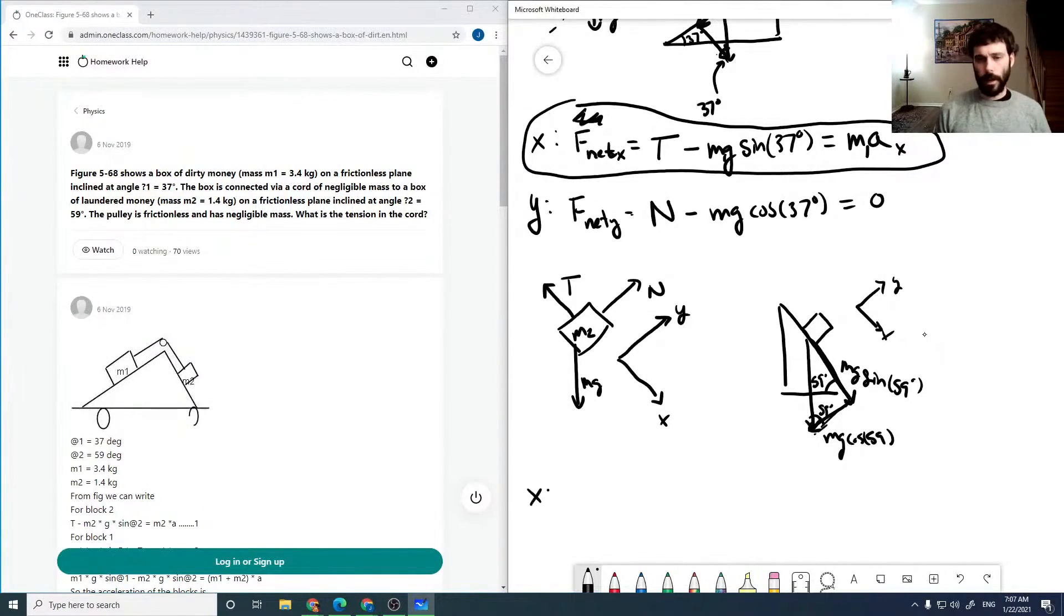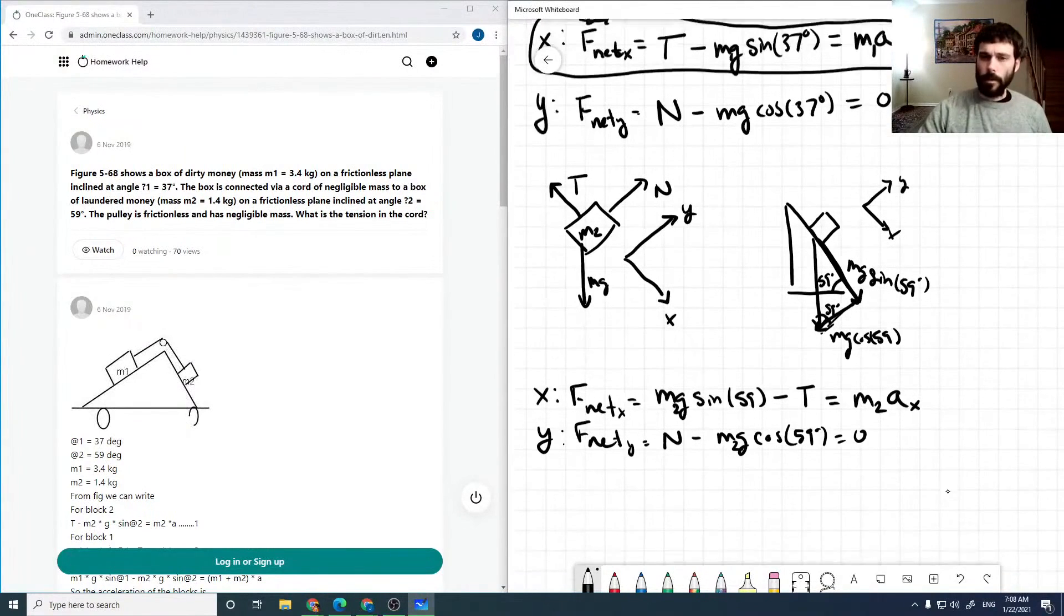If we look at our x force, our f net x is mg sine 59, m2g sine 59 I should say, minus our tension, so our tension goes in the opposite direction, is equal to m2 times our acceleration. And again, just for completeness, our f net y will just relate our surface normal to our mg force. So now we have two equations and two unknowns.